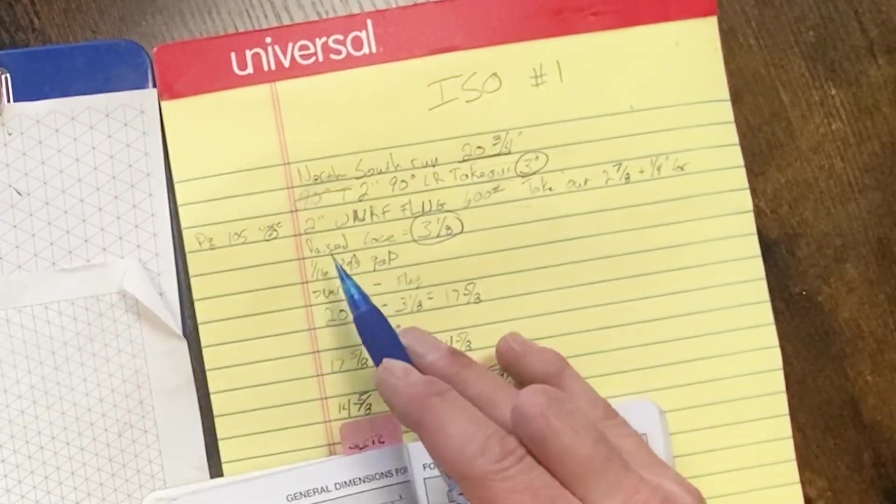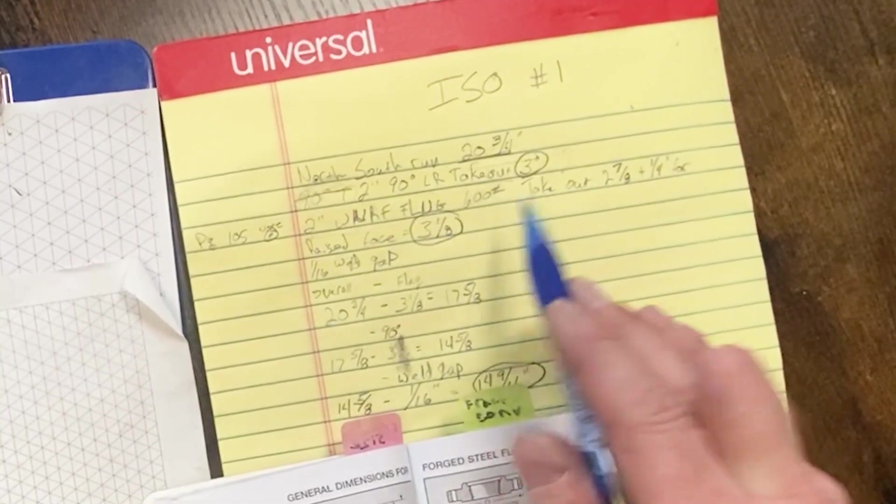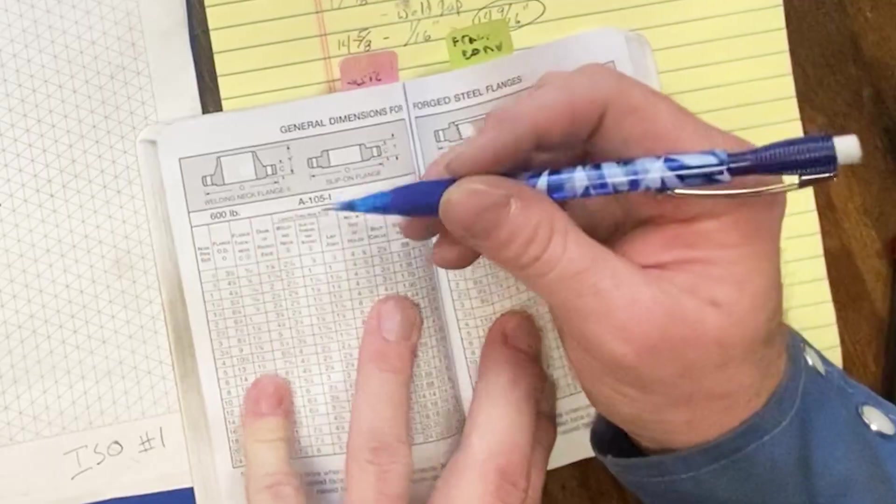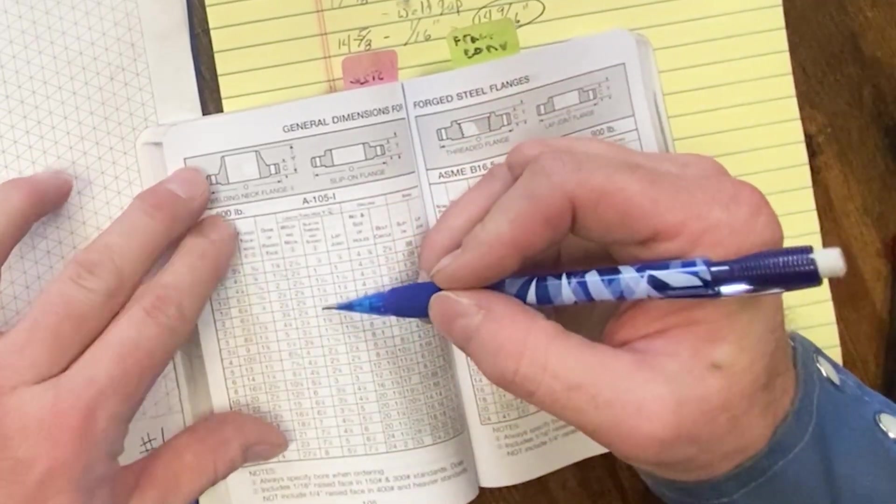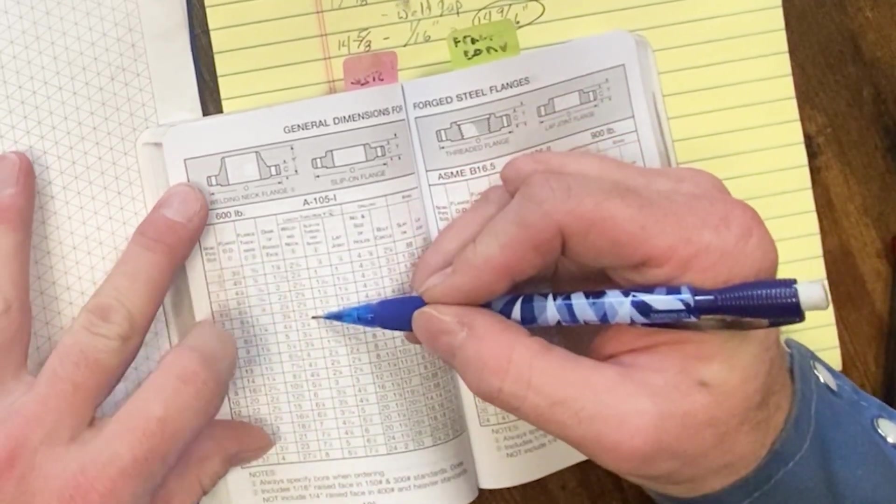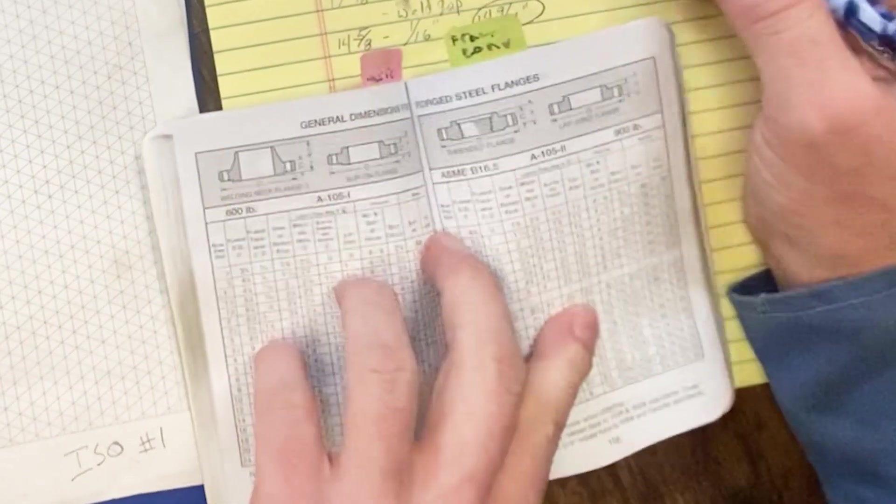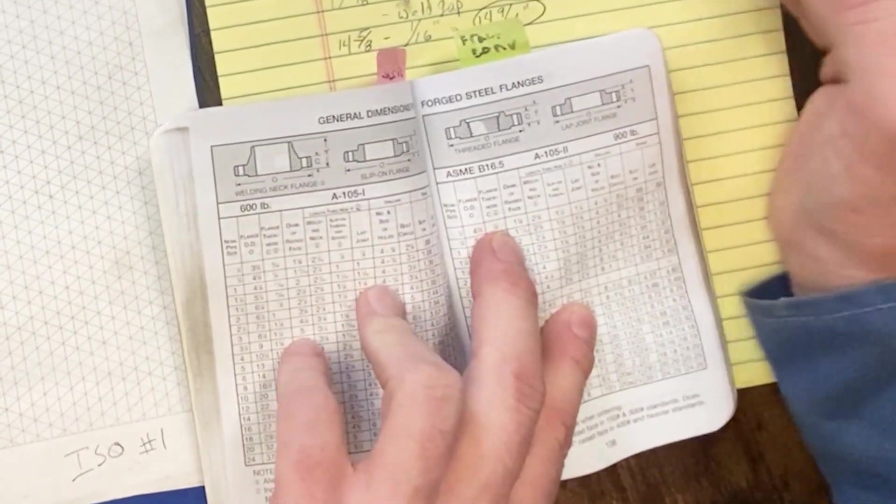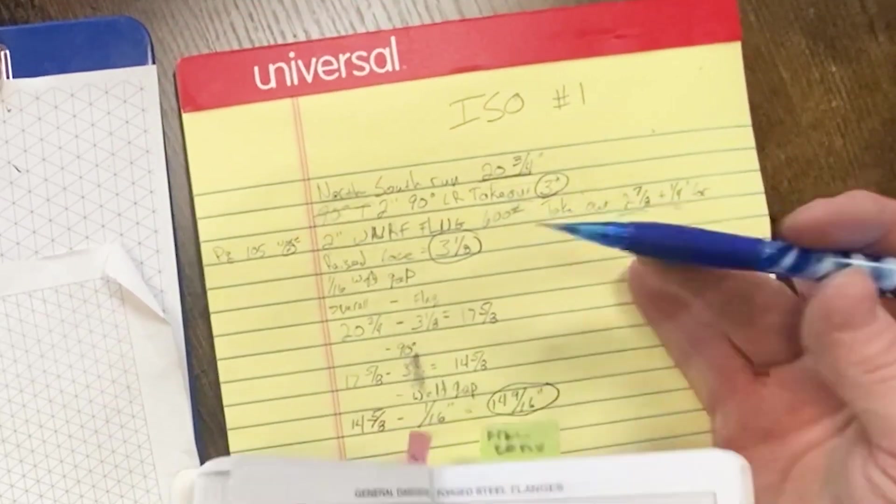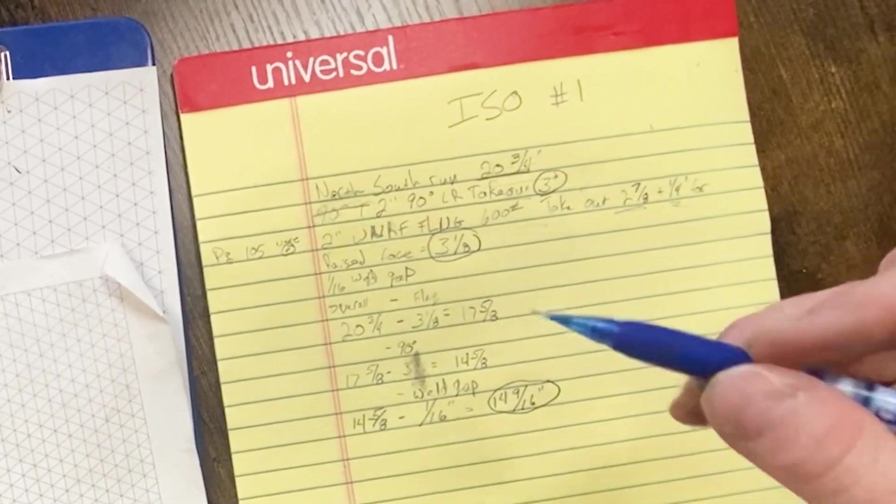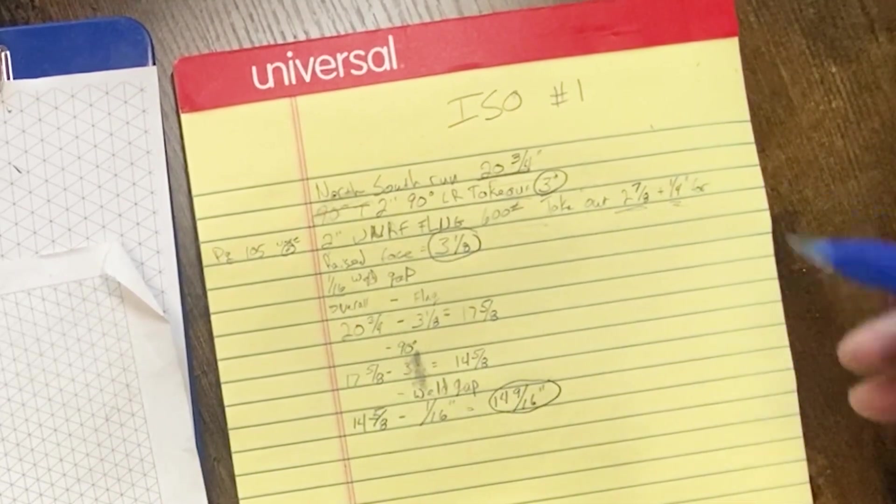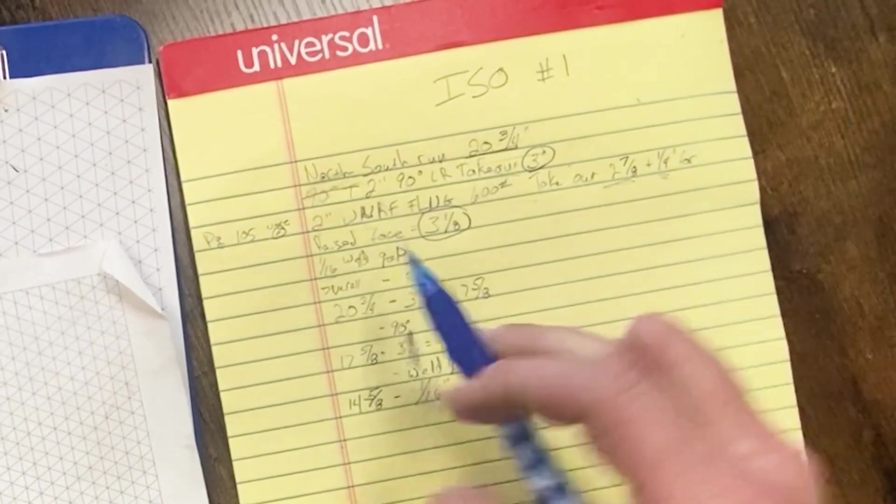So the takeout of a 2 inch raised face weld neck flange, 600 pound, is 2 and 7/8ths plus 1 quarter. And I get that right here, 2 inch, 600 pound, through Y, 2 and 7/8ths plus that quarter inch. That gives you 3 and an eighth. So we take that 3 and an eighth, and we start subtracting that from that 20 and 3 quarters. We've also got to figure in our weld gap, a 16th of an inch is a good baseline.